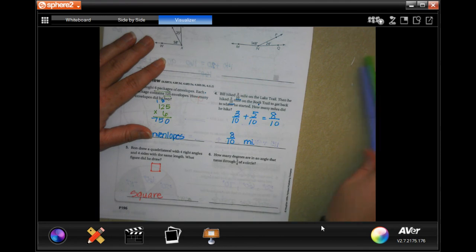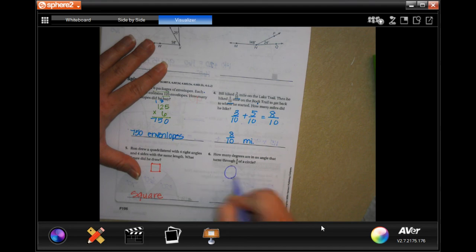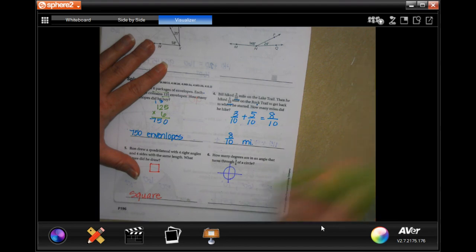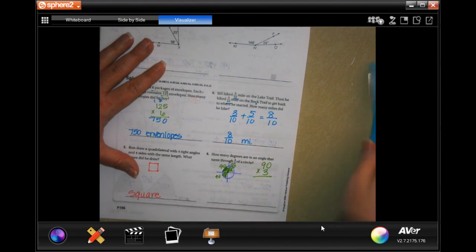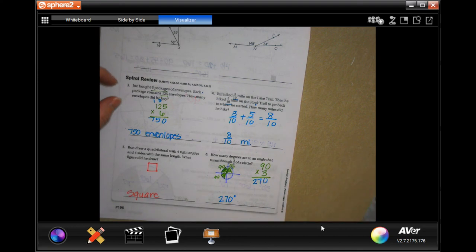How many degrees are in an angle that turns three quarters of a circle? There's a circle and it has one, two, three of those covered. Each one of these is 90 degrees. So 90, 90, 90. So I'm going to come over here and go 90 times three. Three times zero is zero. Three times nine is 27. Two hundred seventy degrees.